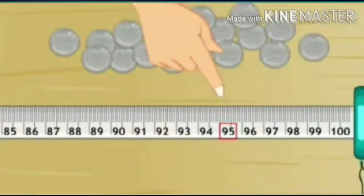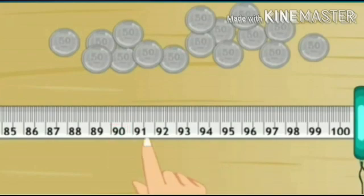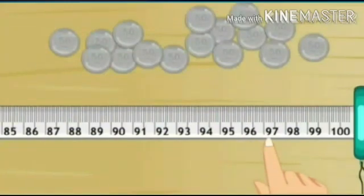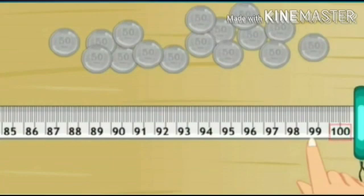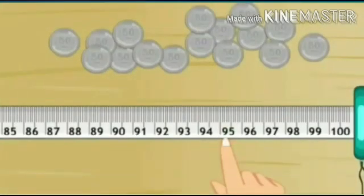Mr. Smith continues: 'The numbers 91, 92, 93, and 94 are closer to 90, so we round them off as 90. The numbers 96, 97, 98, and 99 are closer to 100, so we round them off as 100. Now, 95 is equidistant from both 90 and 100 — therefore, as common practice, 95 is rounded off as 100. Please remember, it is a common practice to round such numbers to the bigger number.'